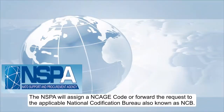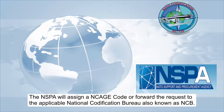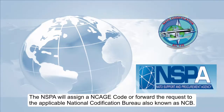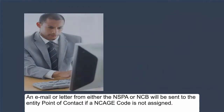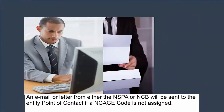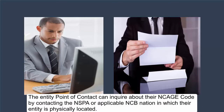The NSPA will assign an NCAGE Code or forward the request to the applicable National Codification Bureau, also known as NCB. An email or letter from either the NSPA or NCB will be sent to the entity point of contact if an NCAGE Code is not assigned. The entity point of contact can inquire about their NCAGE Code by contacting the NSPA or applicable NCB nation in which their entity is physically located.